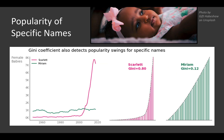We can also use the Gini coefficient to understand popularity of specific names. Here I've plotted Scarlett and Miriam. Both names represent about 60,000 female babies throughout the entire time period, but they have very different popularity patterns. Miriam has been given to about 1,000 babies every single year since 1950, whereas Scarlett only really took off in popularity around the year 2000. Taking each year and sorting from least popular to most popular, I can trace out the Lorenz curve and compute the Gini value. Scarlett scores at 0.8 — very large — meaning it had some very popular years and some not popular years, whereas Miriam is close to zero, meaning it had consistent popularity throughout the entire time period.